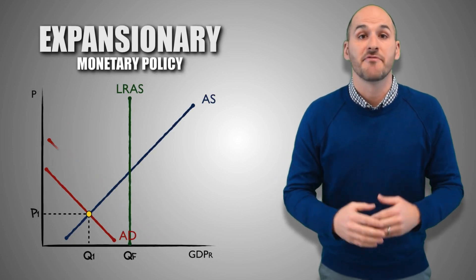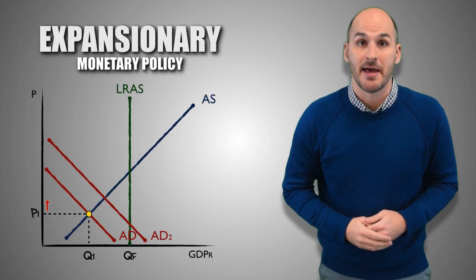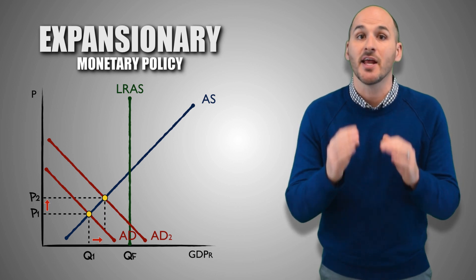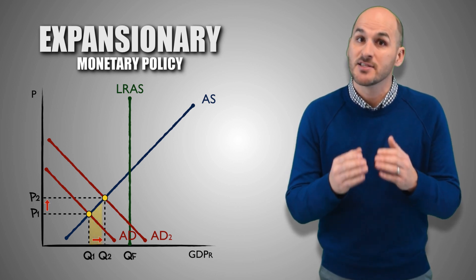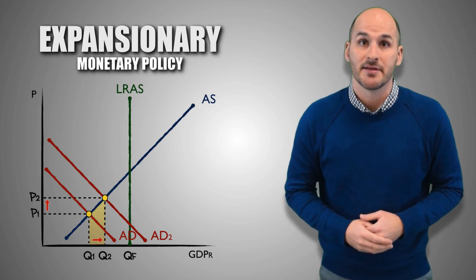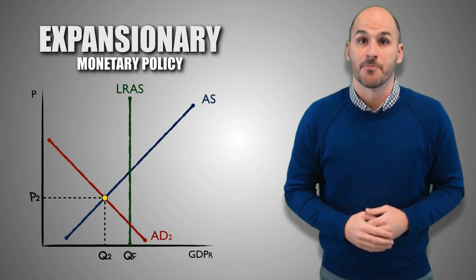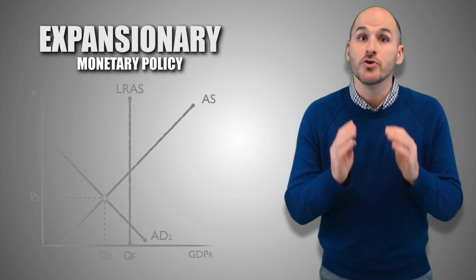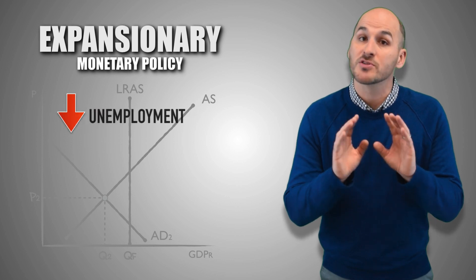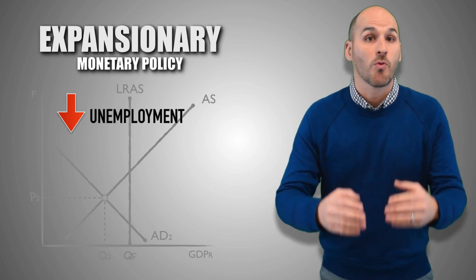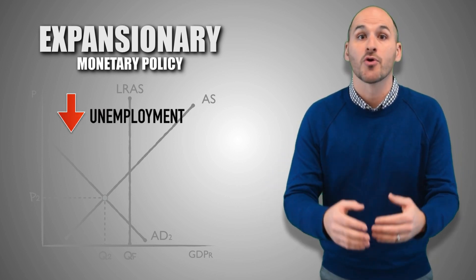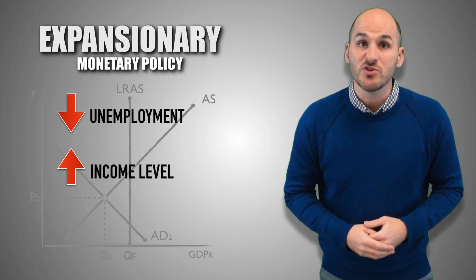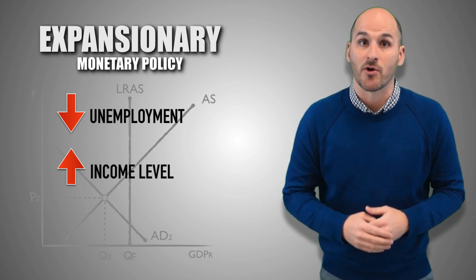The increase in investment spending stimulates aggregate demand and signals to firms across the economy that they need to increase the quantity of products they supply to meet higher demand. In order to boost output production, firms will acquire more labor, and so new jobs are generated and unemployed workers find work. As more workers are hired and earn a wage for their labor, income levels rise, leading to a wave of new spending in the aggregate economy.